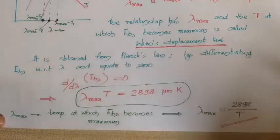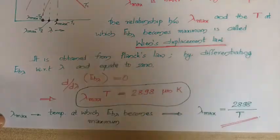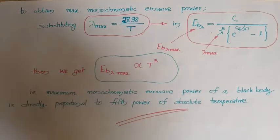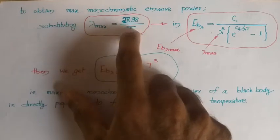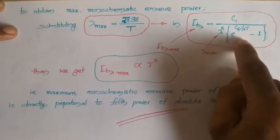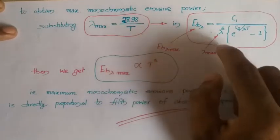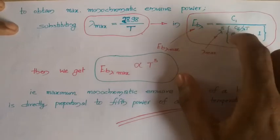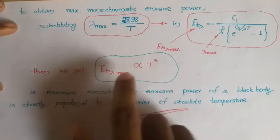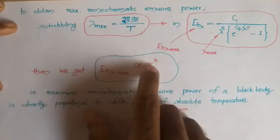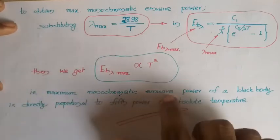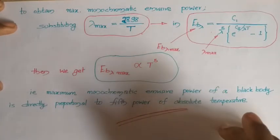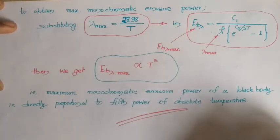An important result from Wien's displacement law: by substituting lambda_max back into Planck's expression, you obtain the maximum monochromatic emissive power. After substituting values for C1 and C2, it is found that the maximum monochromatic emissive power E_b_lambda_max is directly proportional to T raised to the 5th power. We will revisit this result after discussing the Stefan-Boltzmann law.